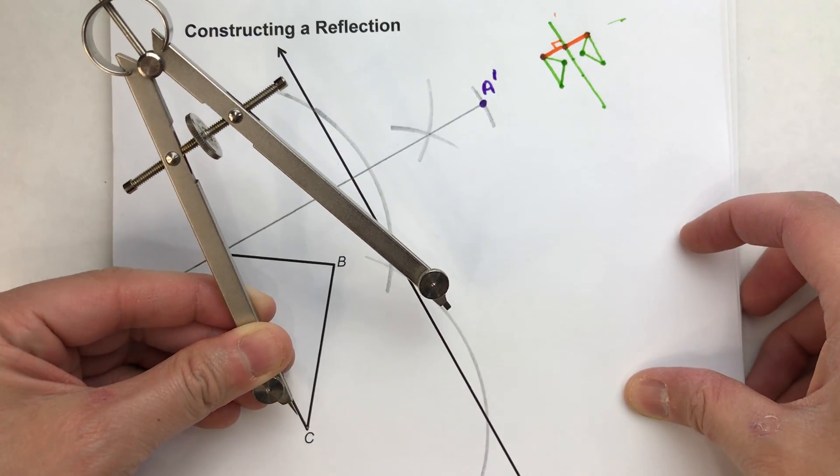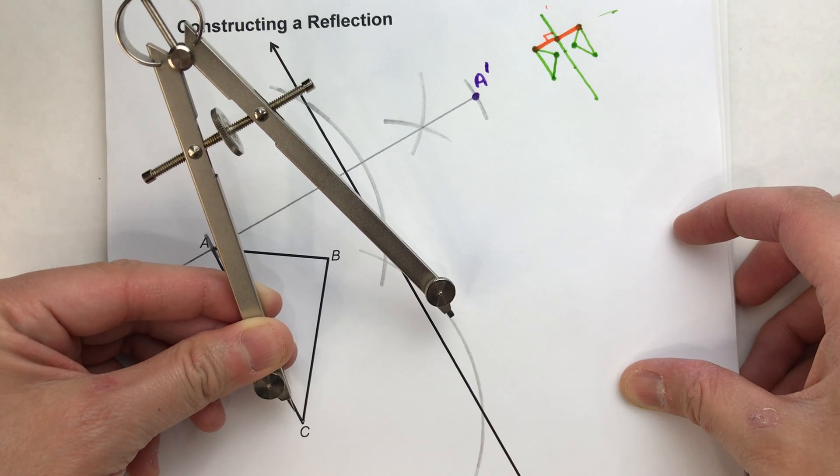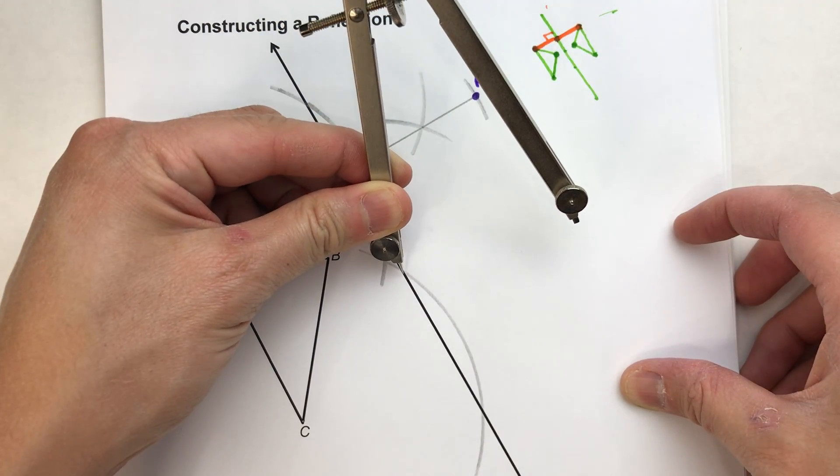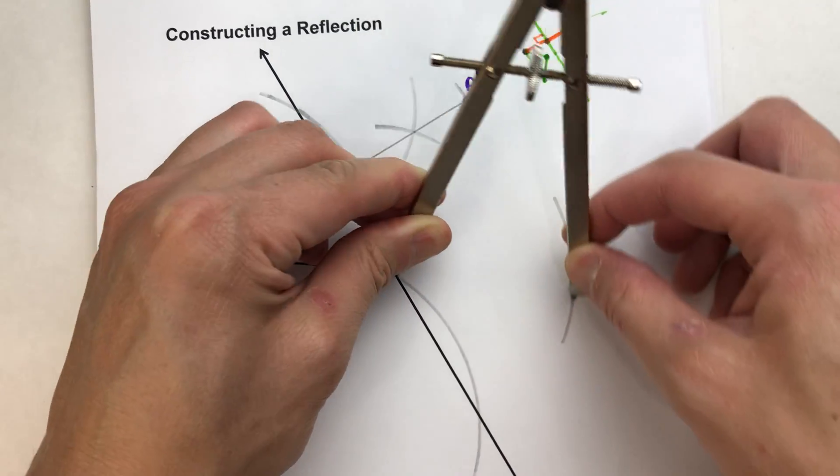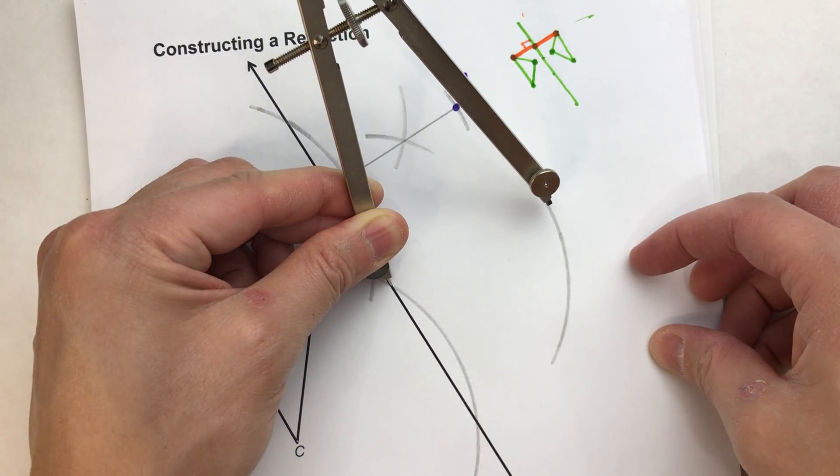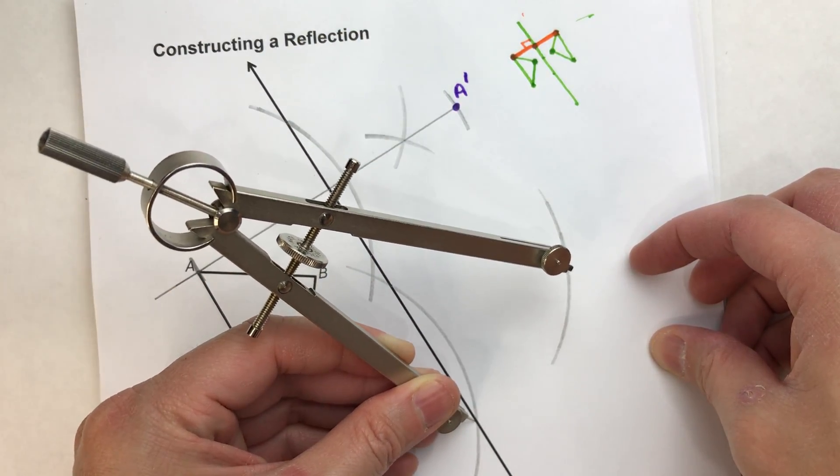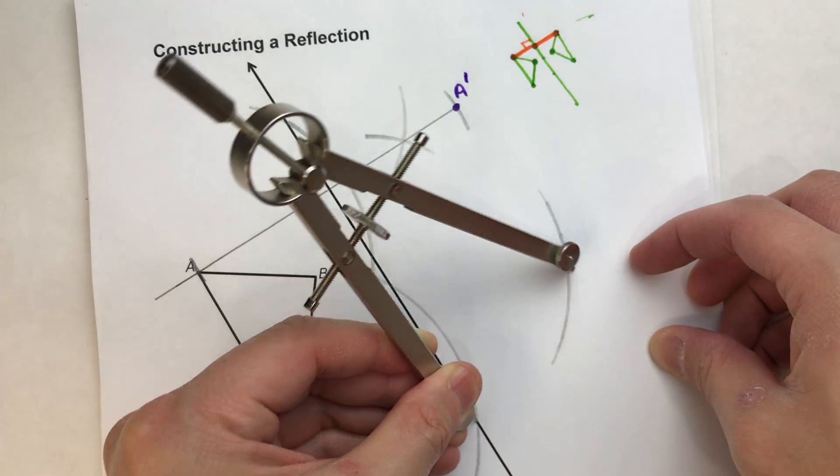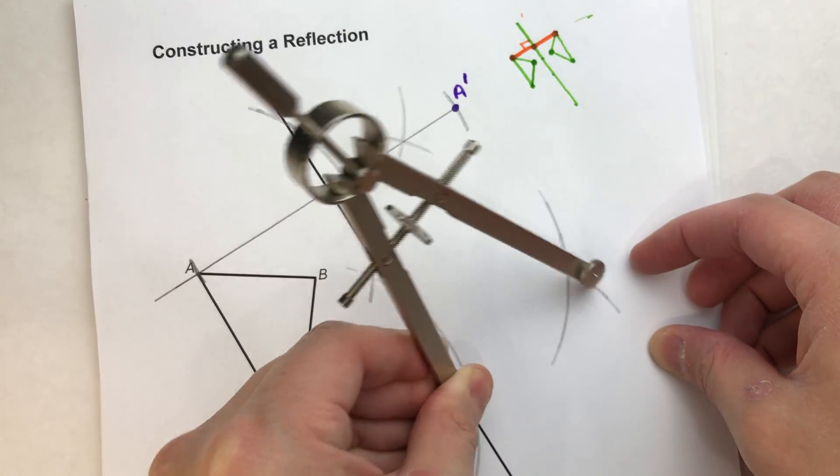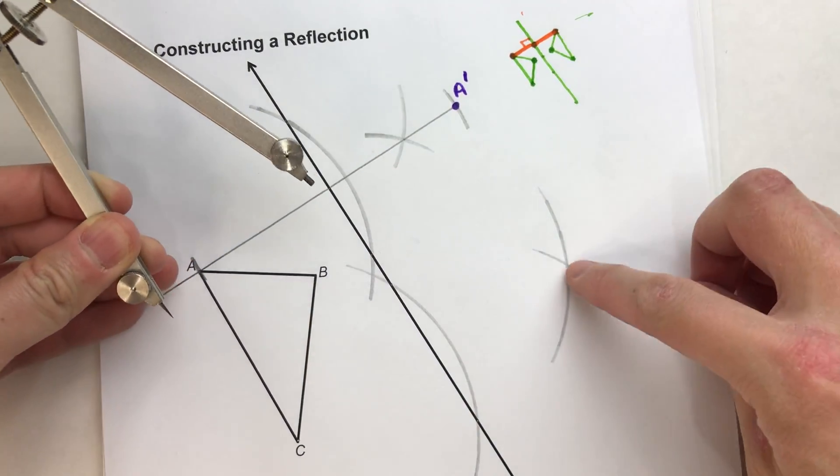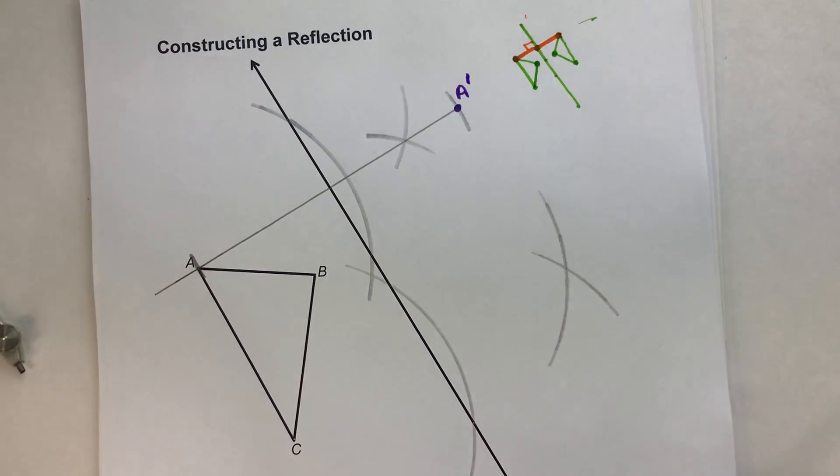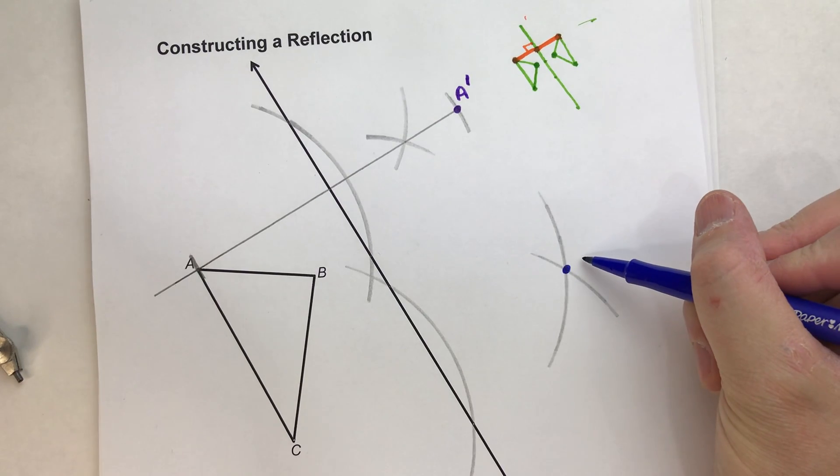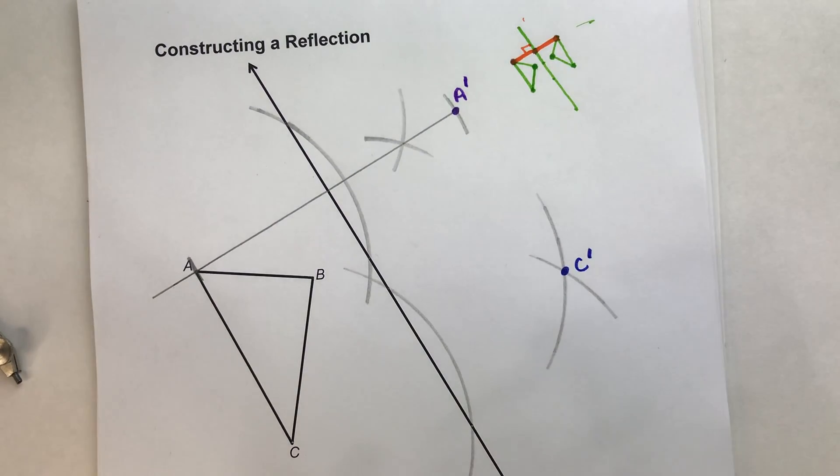Now I'm going to keep that exact same compass setting and off of where the arc hits the line of reflection, I'm going to swing it. And then off of where the arc hit the line of reflection on the other side, I'll swing it. And this point where the two arcs intersect, right here, turns out this is my C prime.